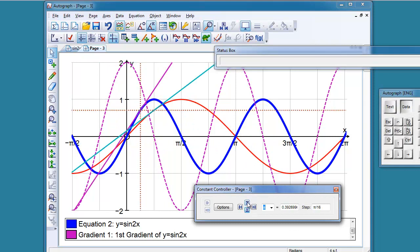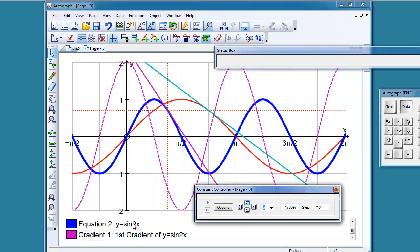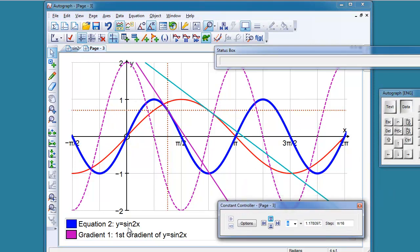So I think this is quite a nice way of illustrating the chain rule, and that the doubling process could clearly be investigated again if it was sine 3x and sine 4x and so on, and noticing that the amplitude goes to 3 and 4. So that's the link, I think, between the chain rule, y equals sine 2x and y equals sine x.